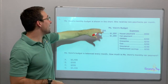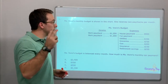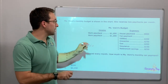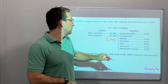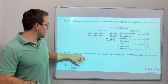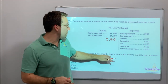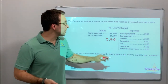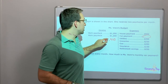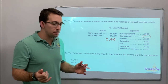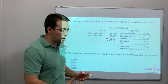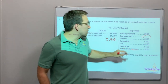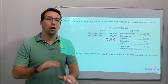Problem one: Miss Thon's monthly budget is shown in the chart. She receives two paychecks per month. Her income is $2,400. Now for her expenses — if Miss Thon's budget is balanced every month, how much is Miss Thon's monthly car payment? So we have to figure this out. If a budget is balanced, that means the income you receive is the same as your expenses. Remember: savings is always an expense — not income.